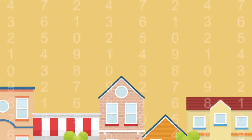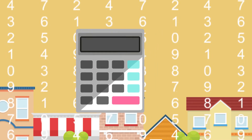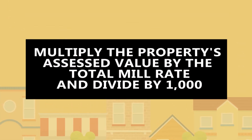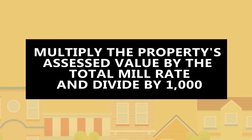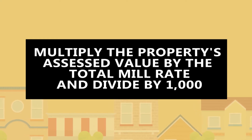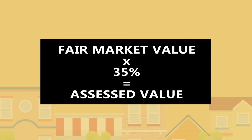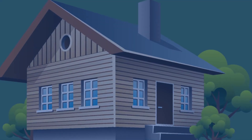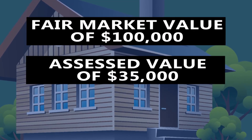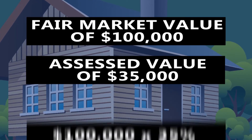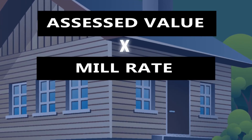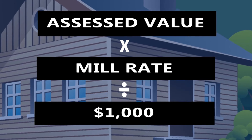So let's go to the formula for calculating property taxes. To arrive at the amount of property taxes a taxpayer owes, the formula is to multiply the property's assessed value by the total mill rate and divide that by 1,000. Expressed as an equation: fair market value times 35% equals the assessed value. For example, a home with a fair market value of $100,000 would have an assessed value of $35,000 — that's $100,000 times 35%.